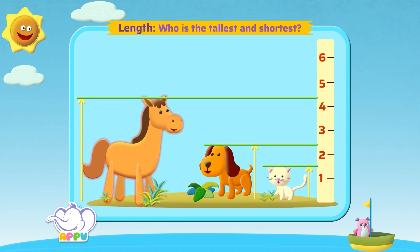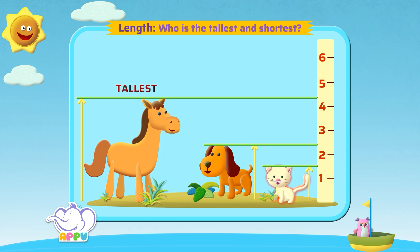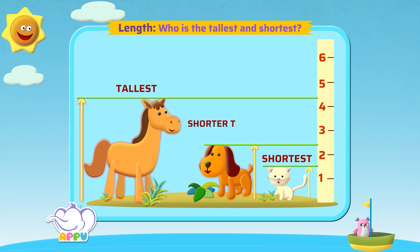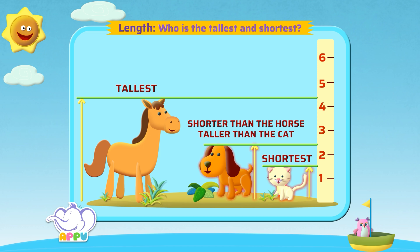Horse says, I am the tallest. Cat says, I am the shortest. Dog says, I am shorter than the horse and taller than cat. How nice!